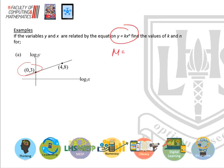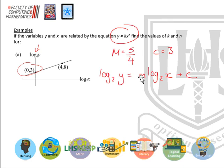The gradient — we do y₂ minus y₁ — is going to be 5 over 4. And the y-intercept is 3. So we can write y equals mx plus c. But two things: it's not y equals mx plus c — it's log to the base 2 of y, because that's what the axis is, and it's log to the base 2 of x. So that gradient is 5 over 4 and that c is 3.